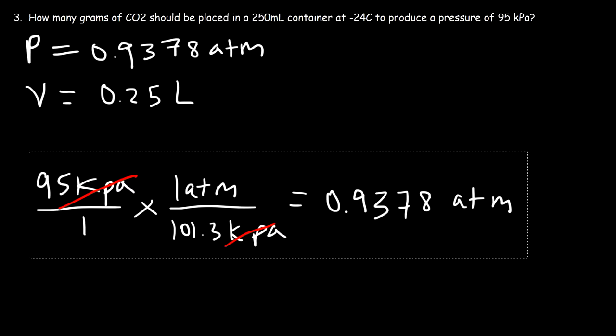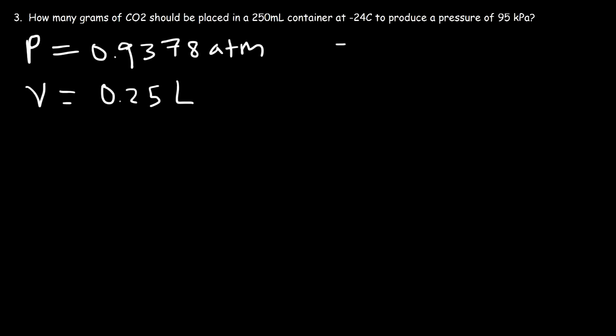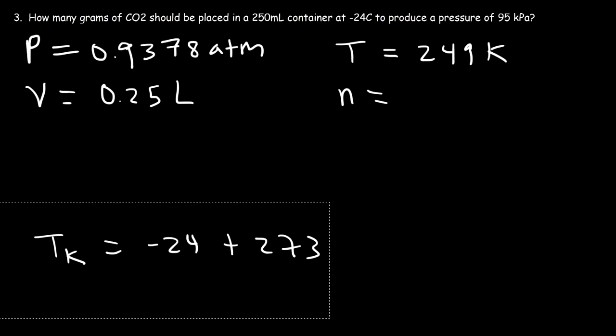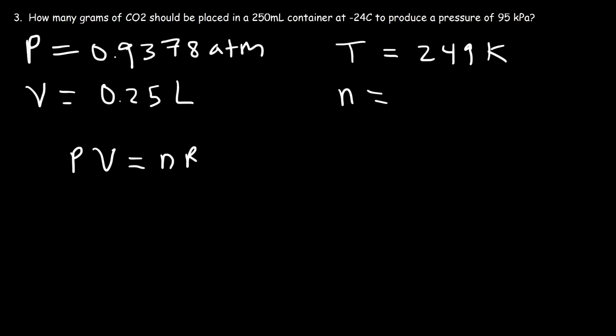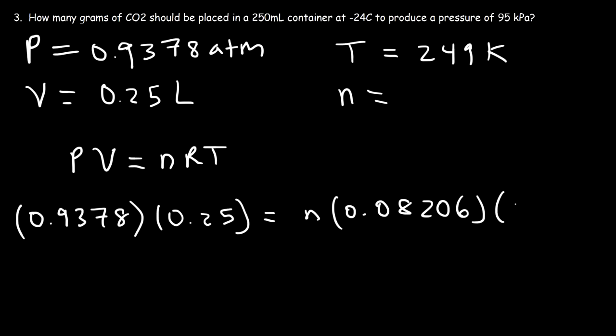Next we have the temperature, which is negative 24 degrees Celsius, so we've got to convert that to Kelvin by adding 273 to it. So negative 24 plus 273 is equal to a Kelvin temperature of 249. So with this information we can now calculate the moles. So using the formula PV is equal to nRT, P is 0.9378, the volume is 0.25 liters, and we have the value of R, that's 0.08206, and T is 249 Kelvin.